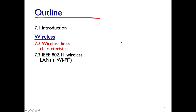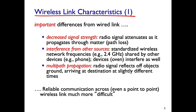Now let's look at the characteristics of wireless links and their important differences from wired links. There are three main differences. The first is path loss: signal strength decreases with distance and depends on frequency. In wired communication the signal also loses strength, but in wireless the loss is much more significant and rapid, making it difficult to receive signals over longer distances.